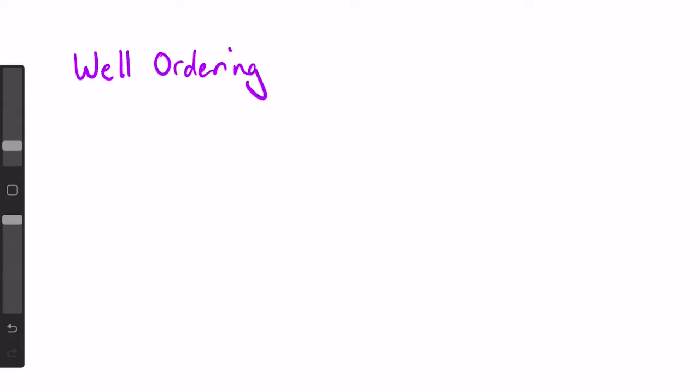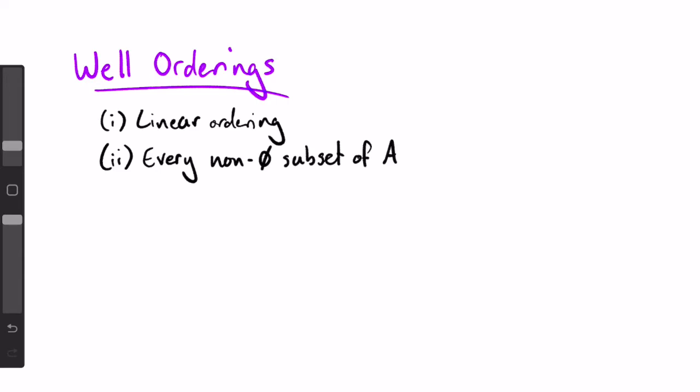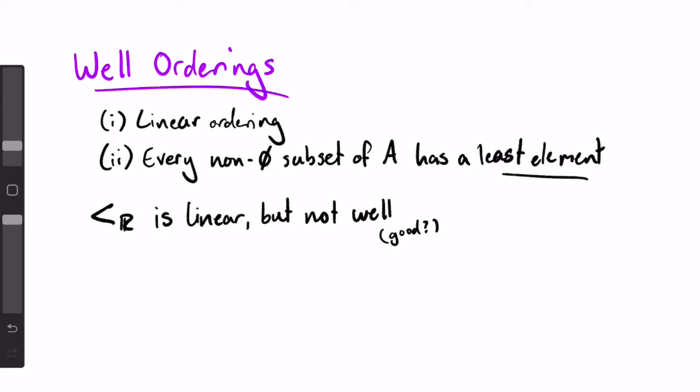Finally, a well ordering on a set A is a linear ordering with the further property that every non-empty subset of A has a least element. So, for example, while the less than ordering on the reals is a linear ordering, it is not a well ordering, because there isn't one real number that's less than every other real number. On the other hand, less than on the set of positive integers is a well ordering, because every possible subset of the positive integers has some minimum value. You should check out the example problems, which are linked in the description, for a more detailed explanation of why this is a well ordering.